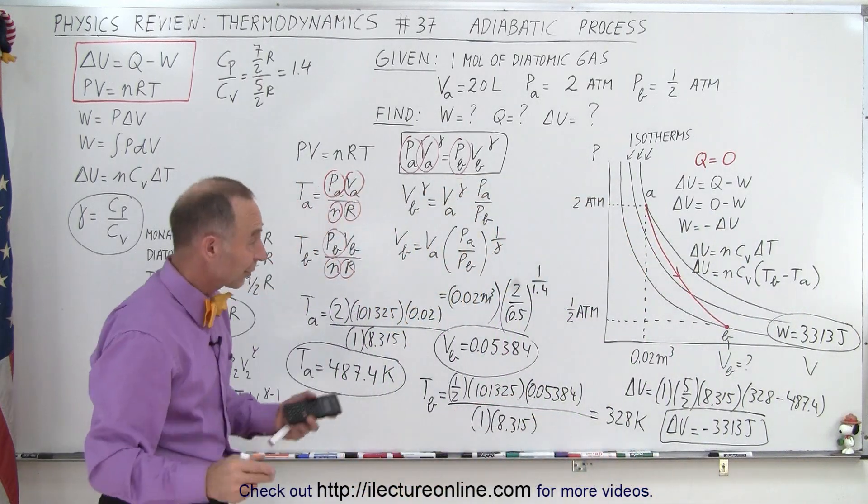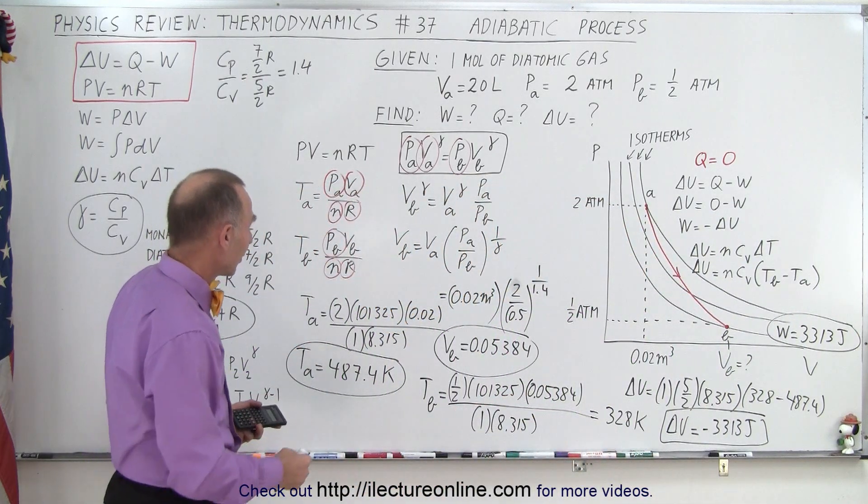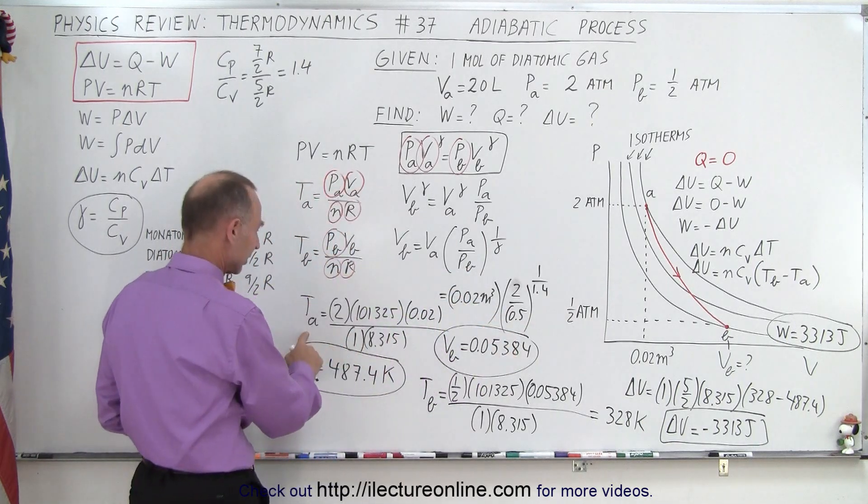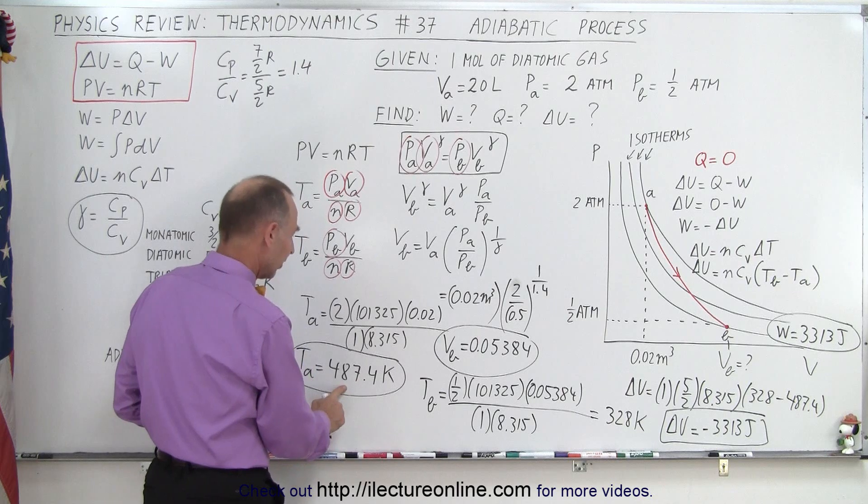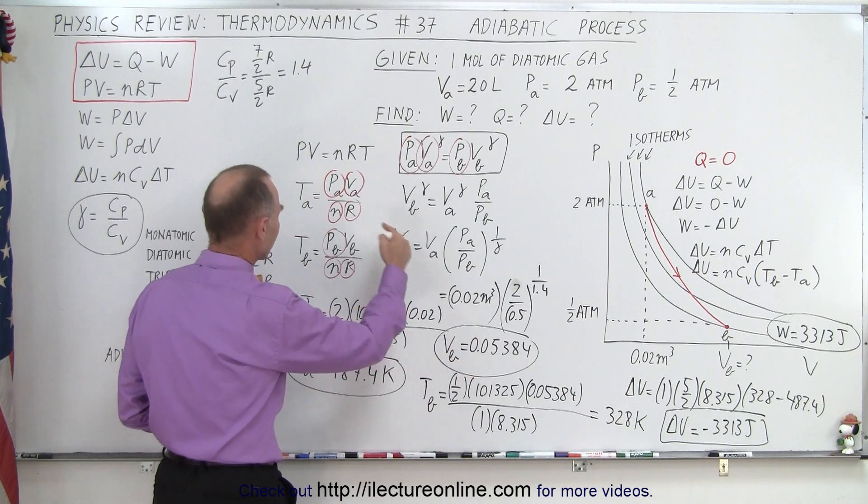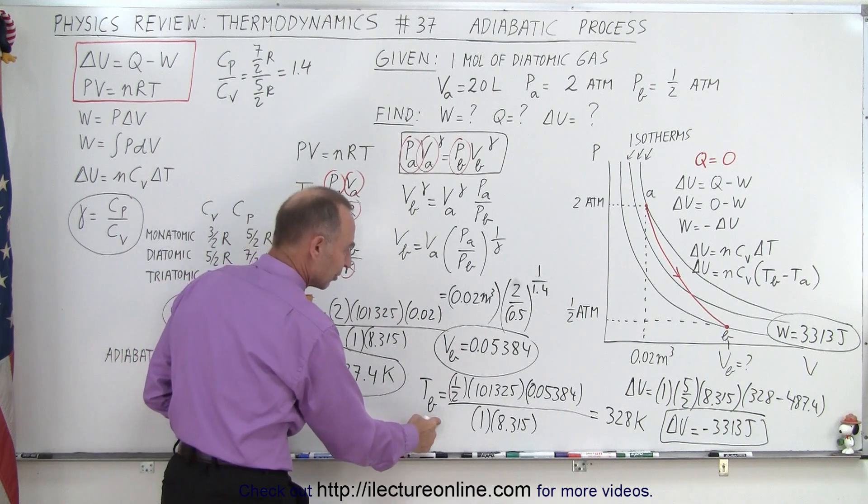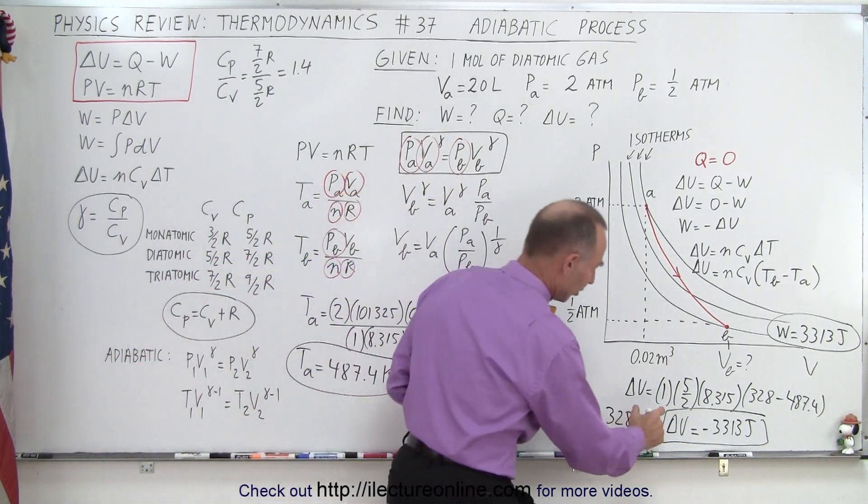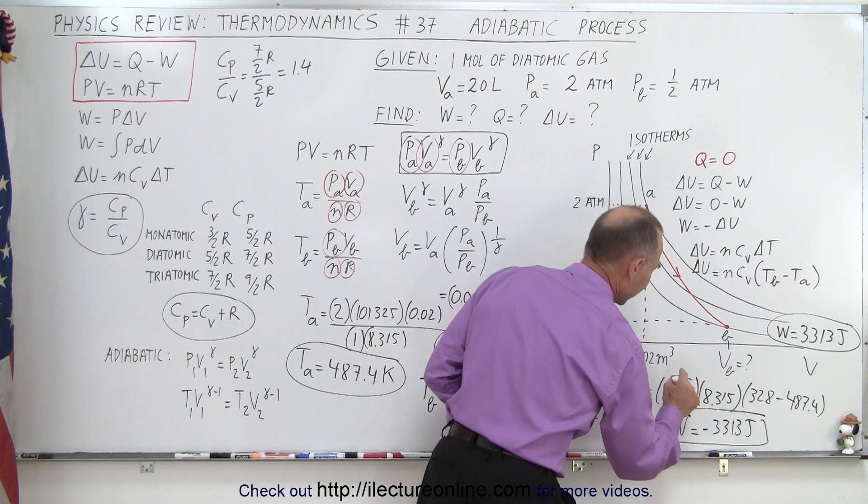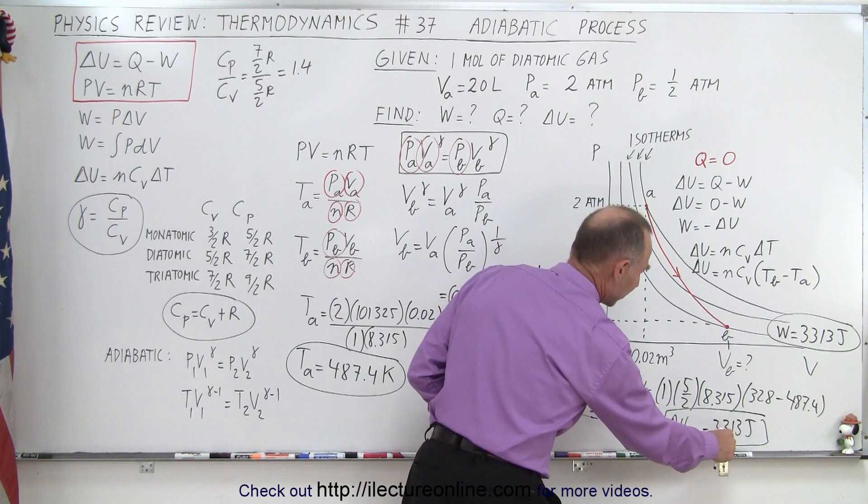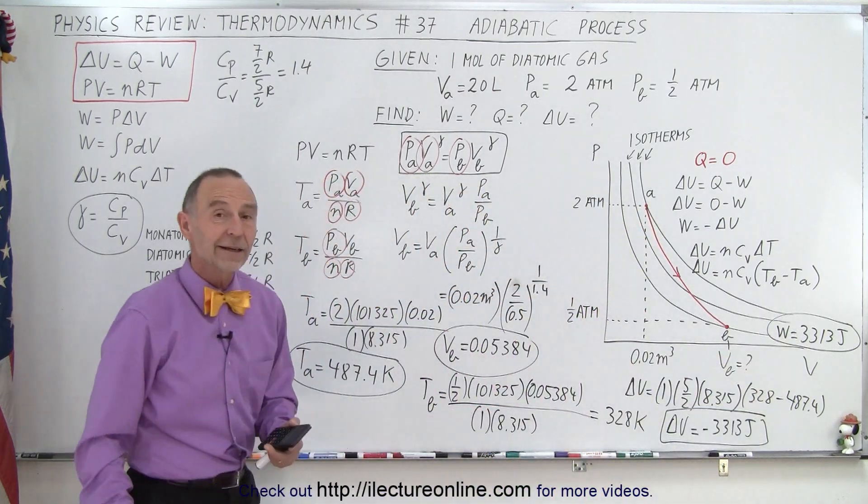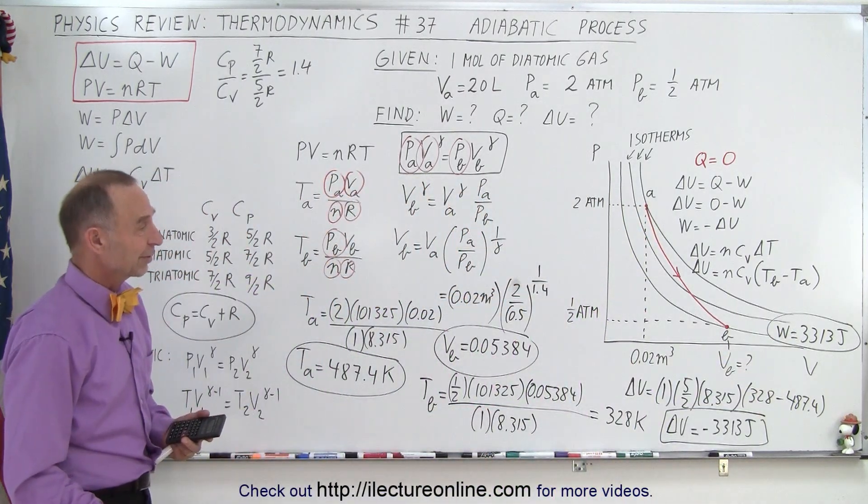Alright, so here we have the final results. After we find the volume at B, right here, first of all, we calculate the temperature at A. That was this. Then we use this equation to find the volume at B. Then we could plug that into this equation to find the temperature at B. And then finally, the change in U is simply equal to the change in the temperature times C_V times the number of moles. And once we have that number, we just change the sign to get the work done. And that is how we deal with an adiabatic process.